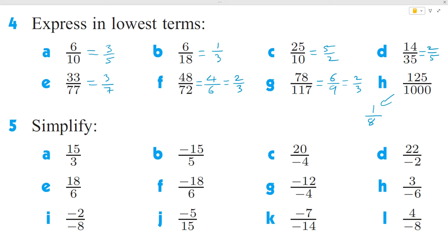Moving on to question 5a, dividing top and bottom by 3. 15 divided by 3 is 5. So this is just going to be a whole number.